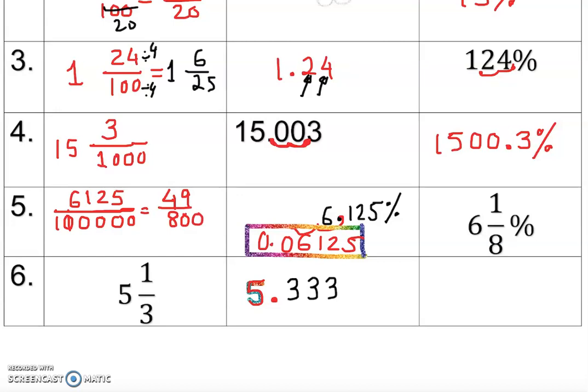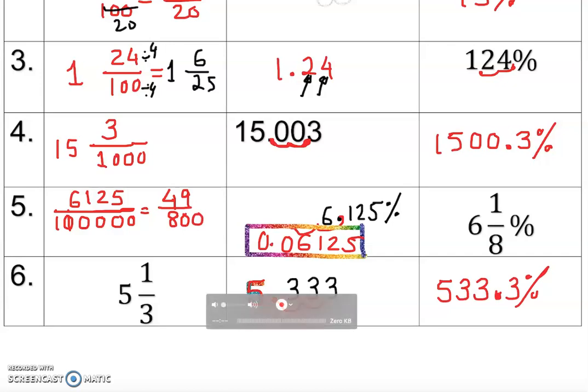The decimal keeps repeating, so where do we place it? When converting to percentage you need at least one decimal place, so keep three decimal places. We move the decimal two places to the right to get the percentage: 533.3 percent. That concludes our understanding of fraction, decimal, and percentage conversions — you can work any way they ask the question. Thank you so much.